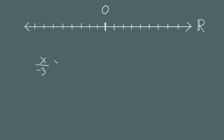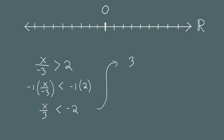Another example: x divided by negative 3 is greater than 2. Again we break it into two steps. First multiply both sides by negative 1 — because the original expression lies to the right of 2, after flipping the order reverses, so the left side now lies to the left of the right side. The negative signs cancel, leaving x divided by 3 is less than negative 2. Then multiply both sides by 3 — a positive number, so no flipping — giving x is less than negative 6.